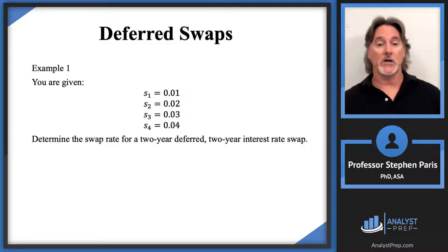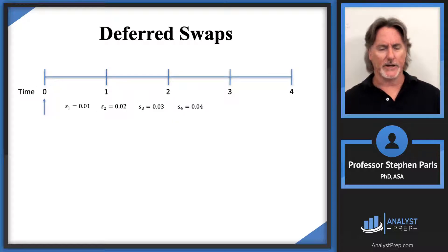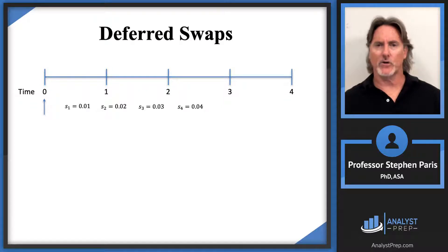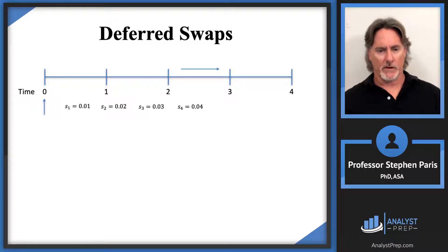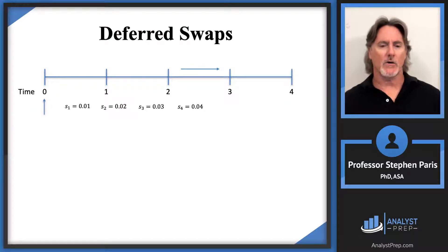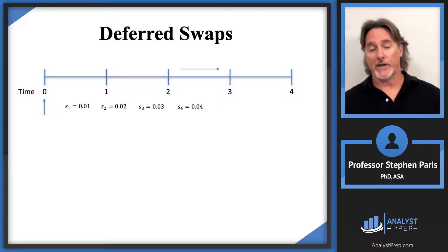Let's talk about what a two-year deferred two-year interest rate swap is by looking at a timeline. Starting at time zero, it's a two-year deferred swap, so we don't do anything for two years, and then it's a two-year interest rate swap. My first swap will occur for an interest payment between time two and time three, and that interest payment will be based off of the forward rate from time two to time three.